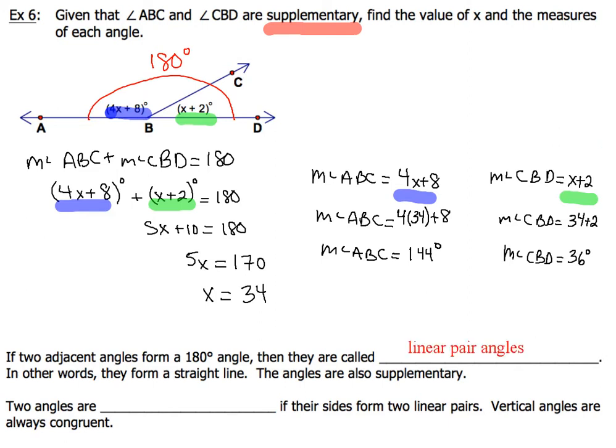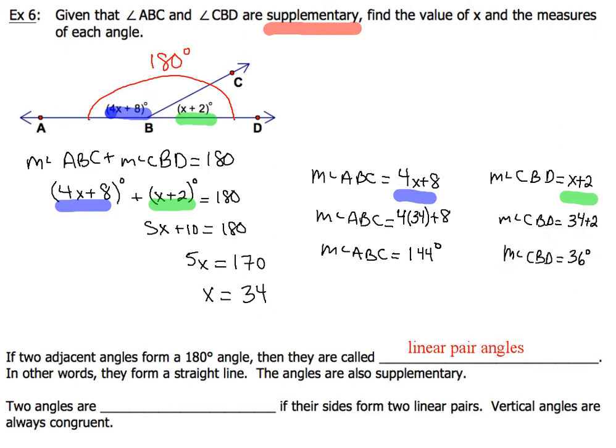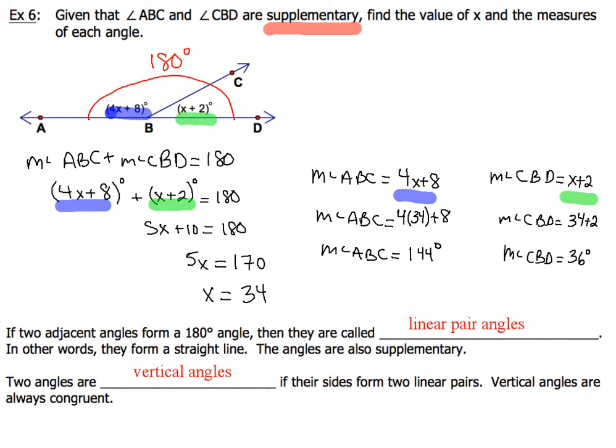When we have two adjacent angles that form a 180-degree angle, they are called linear pair angles — in other words, they form a straight line. The angles are also supplementary, just like we did in Example 6. Now, one other type of angle that we'll study, and we'll get into this a lot more, are vertical angles.